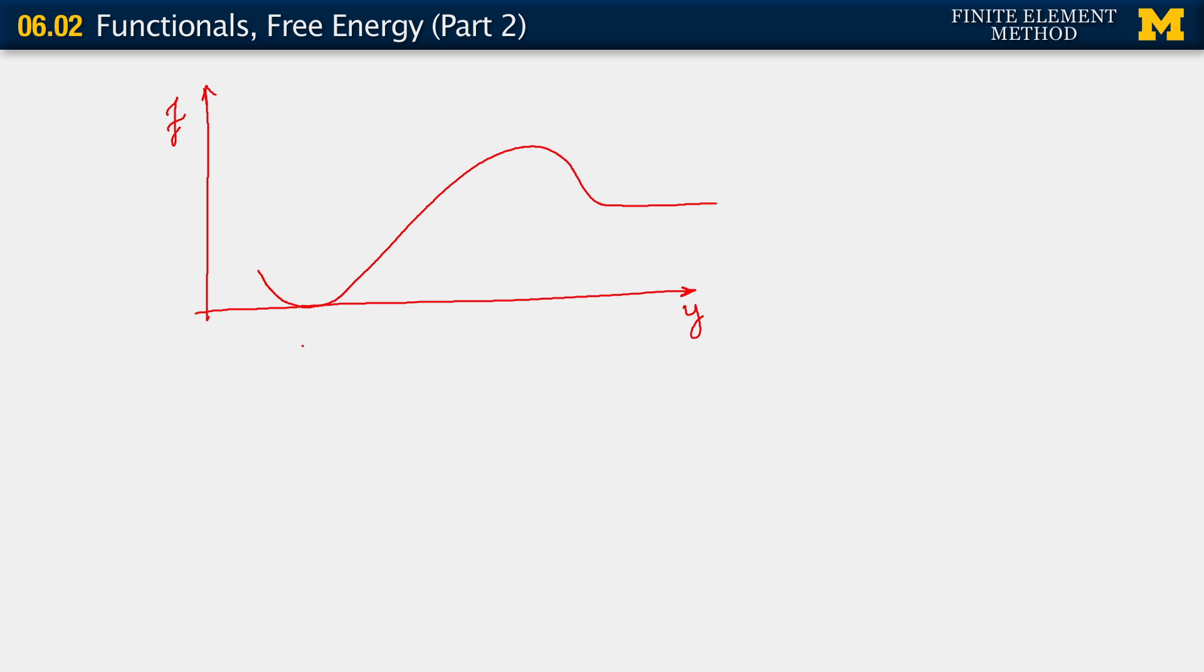So at each of them, we know that f prime is equal to 0, as well as here. And we know that when f prime is equal to 0, we're at an extremum. So each of these are extrema, they're also understood as points of equilibrium. So f prime equals 0 are points of equilibrium.